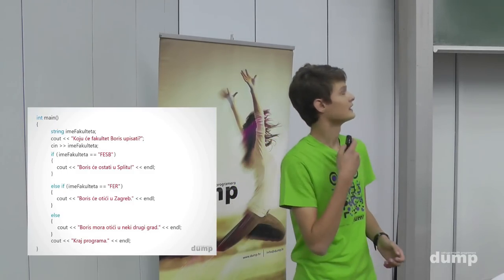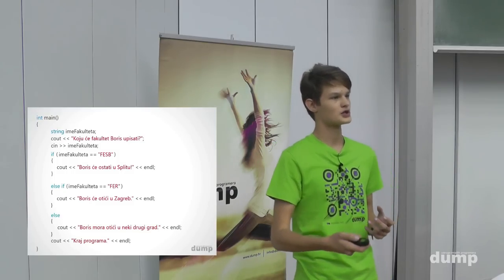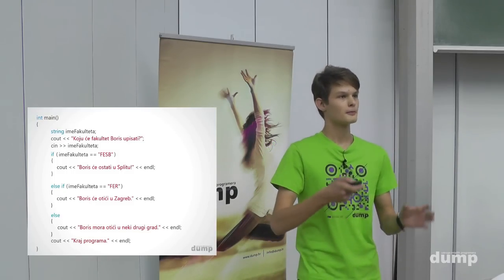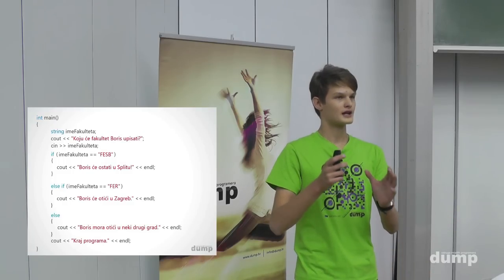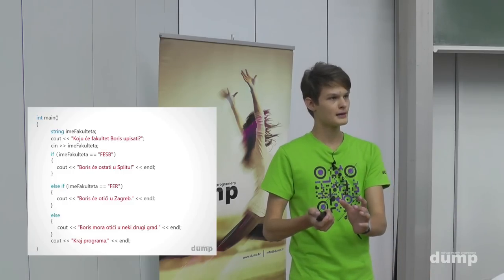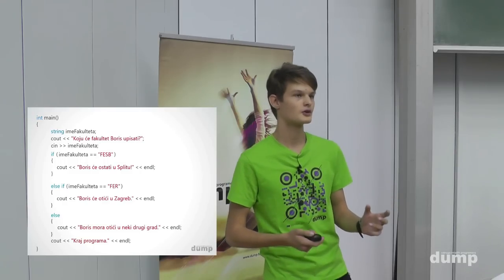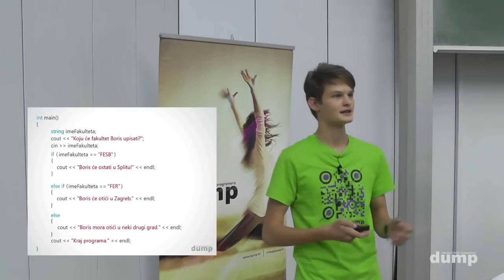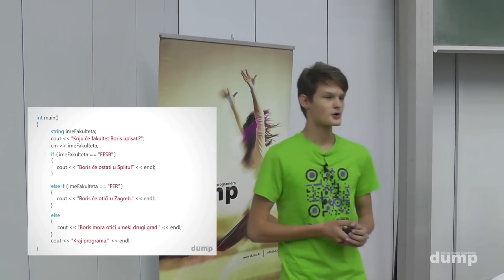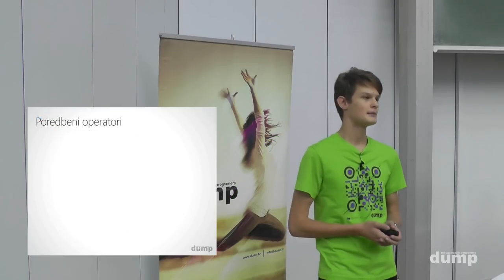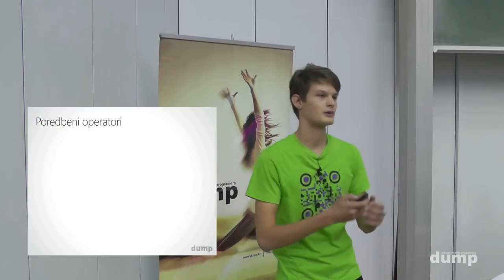Jedno jednako u programiranju je operator pridruživanja — pridružuje vrijednost s desne strane varijabli s lijeve strane. Dva jednako koristimo kad želimo usporediti nekakve vrijednosti. Na prošlom predavanju smo spominjali poredbene operatore — ima ih šest, može mi netko pomoći nabrojiti?